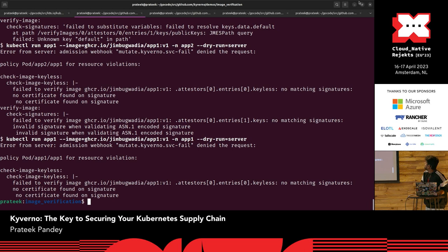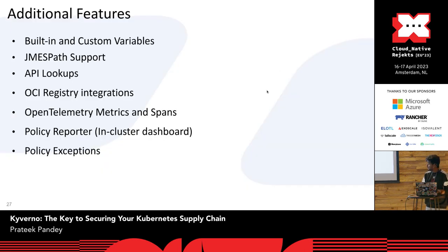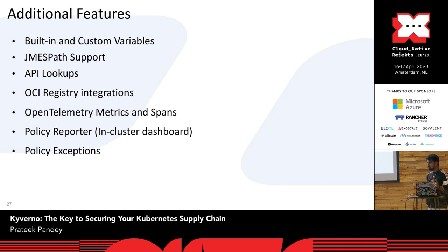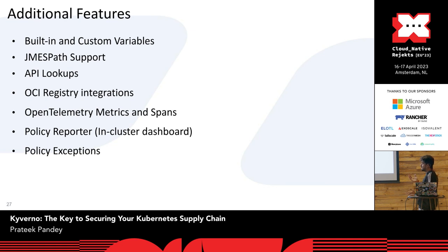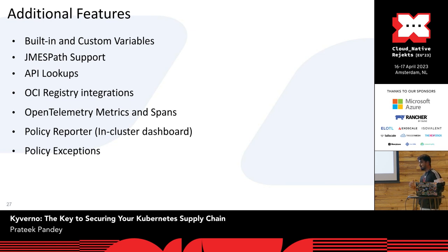Apart from these features, Kyverno has other features as well: built-in custom variables and inbuilt functions for logical operations. JMESPath lets you traverse resources and get important information. You can do API lookups for any Kubernetes built-in resource and act on them. You can register OCI registries — Docker, GitHub registry, or AWS — for image verification. Kyverno also provides metrics and tracing spans to analyze behavior, and a policy report feature with a third-party policy reporter that can be deployed in the cluster to visualize reports.